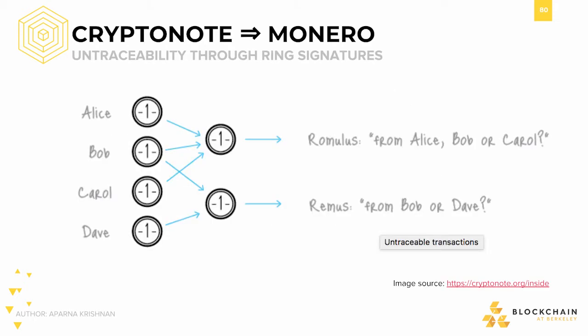The main distinction between a ring signature and an ordinary digital signature is that with a ring signature, any verifier of the signature cannot establish the exact identity of the signer. In this diagram, say Alice constructs a transaction from herself to another user, Romulus. She constructs a ring signature with her public key, as well as that of Bob and Carol. Now, Romulus won't know exactly from whom this transaction was sent — only the fact that it could either be from Alice, Bob, or Carol.